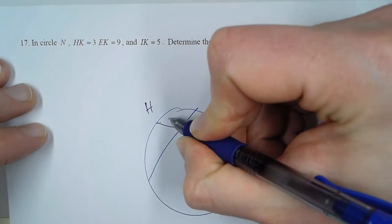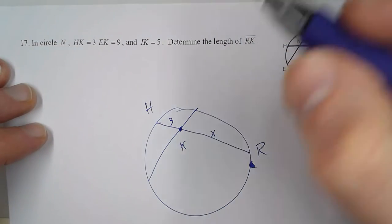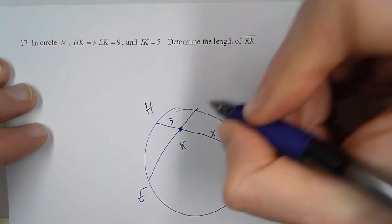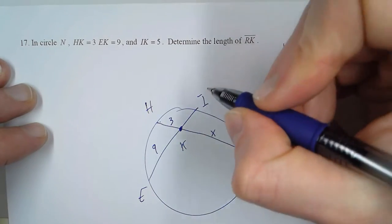We'll call this 3KR. We don't know, so we'll call it X. Then we have E and I, so EK is 9, and IK is 5.